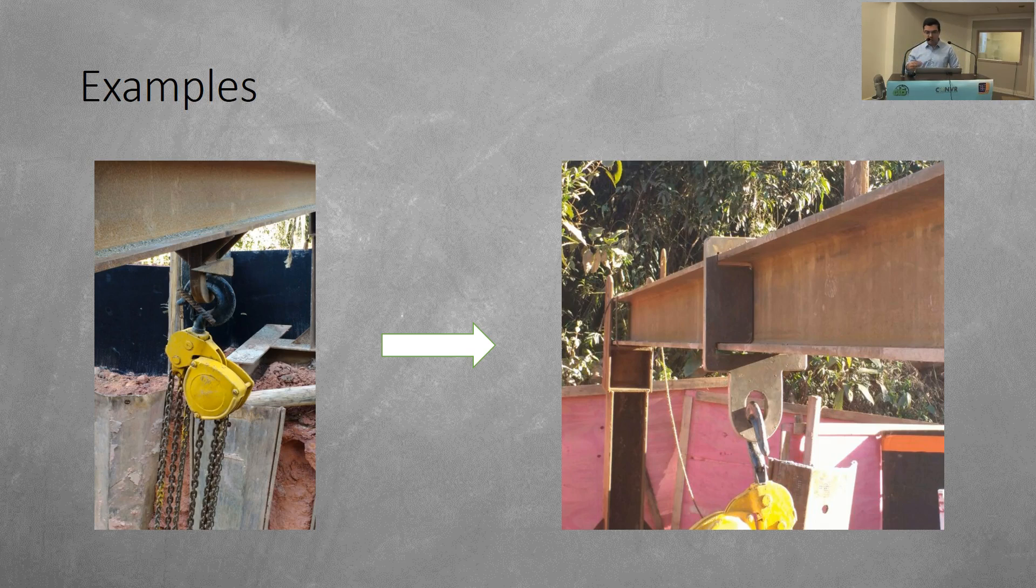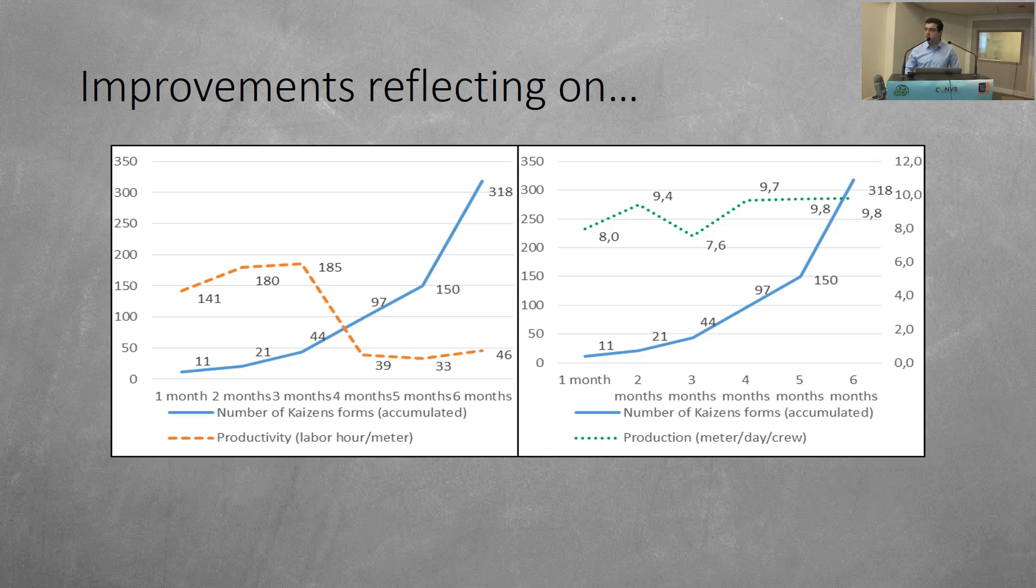And with this data collection of how many Kaizens were made, we tried to cross with some production and productivity rates. So we could see if this is getting our construction better or not. Is this having some impacts on our construction management? And then we found these two graphics. You can see the left one, we have the productivity labor rates, and then we cross with the number of Kaizen forms that we received. And the right one, we have the production per day, and then with the same Kaizen forms we received.